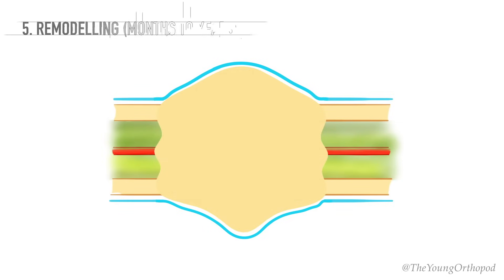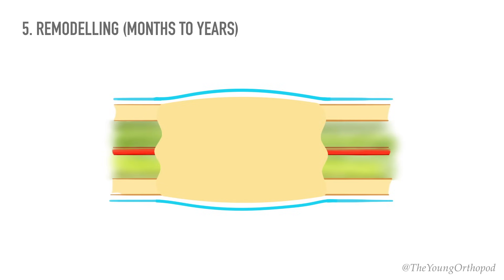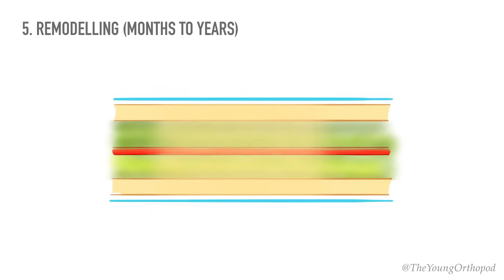The fracture has consolidated once it has completely healed with bridging bone. Now the fracture has been bridged by a cuff of solid bone. Over a period of months or even years, the crude weld is reshaped by a continuous process of alternating bone resorption and formation.